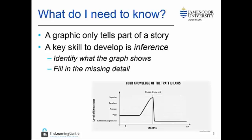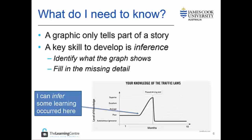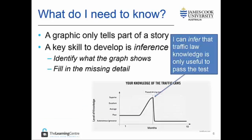On this graph I can infer that some learning occurred here. I can do this because I can see that at this point the shape of the data changed. I cannot however know this for sure as this data is not shown in the graph. In a similar way I can infer that traffic law knowledge is only useful to pass the test and is then discarded. I infer this again from the shape of the data which is represented in the graph.